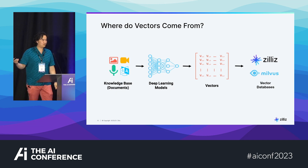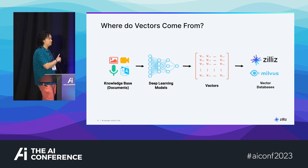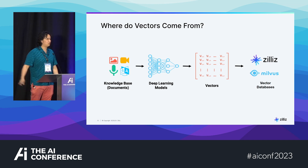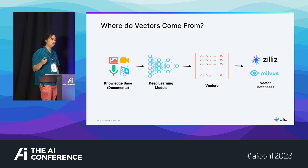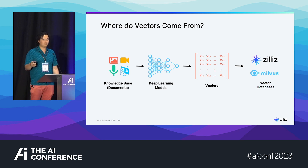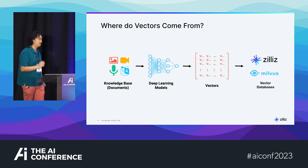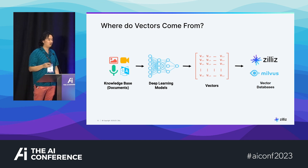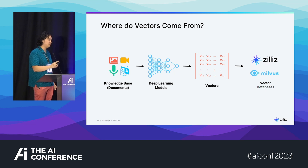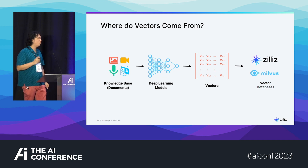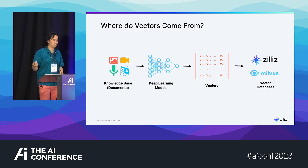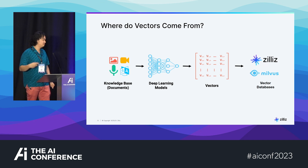Where do you get your vectors? Now that we understand what similarity search is, let's look at how we actually get these vectors. Typically they come from your knowledge base and are fed into a deep learning model. The vector embedding is extracted from the second to last layer of your deep learning model. The embeddings model is very, very important — this is what produces your vectors, and it accounts for about 90% of your vector search quality. Once you have those vectors, you store them in a vector database such as Milvus or Zillis.